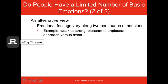Another way of looking at it is that we have specific continuums, and any emotion can be categorized by where it lies on that continuum: weak to strong, pleasant to unpleasant, whether we're interested in the thing or trying to avoid it. So very strong, unpleasant, and avoidance might be disgust.